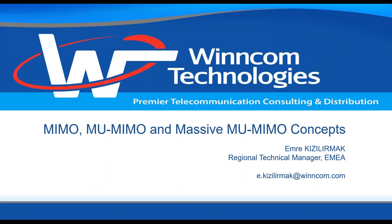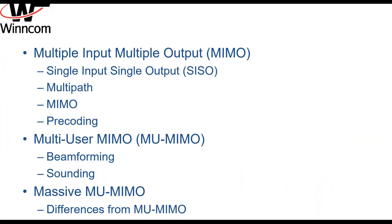I will try to keep it short and simple. However, some level of understanding of RF transmission will be helpful. We will start with a definition of single input single output systems and discuss these problems and see how MIMO systems help us to overcome them. Then we will move forward with MU-MIMO by covering the two main technologies that make MU-MIMO possible: beamforming and sounding. And we will finish with discussing Massive MU-MIMO and how it differs from MU-MIMO.